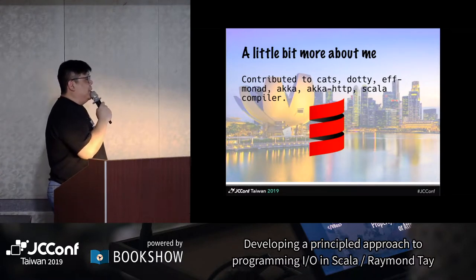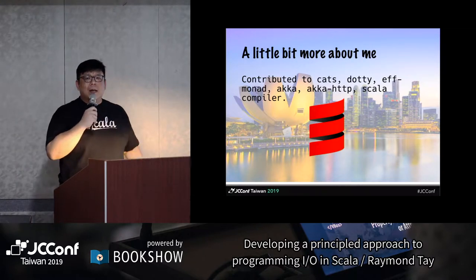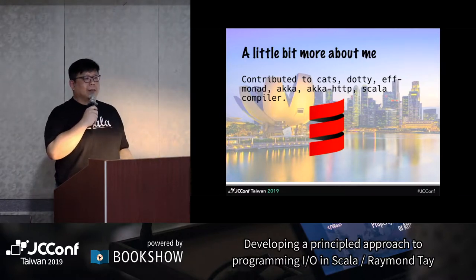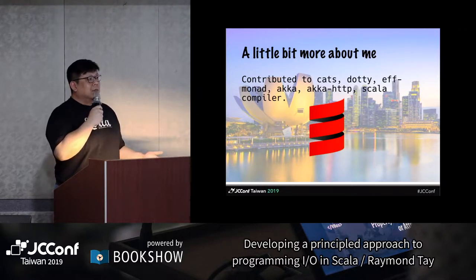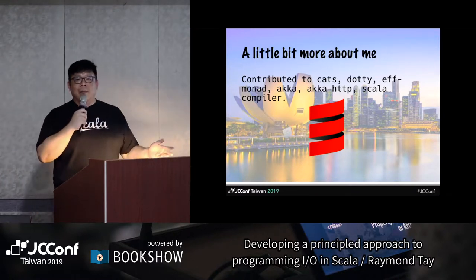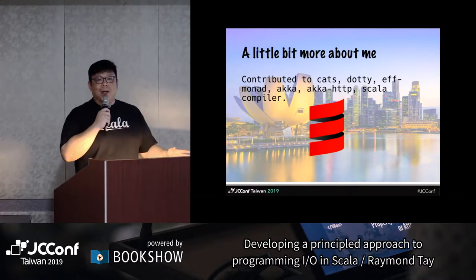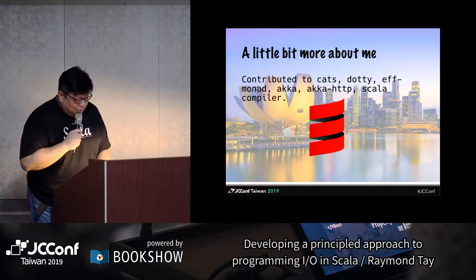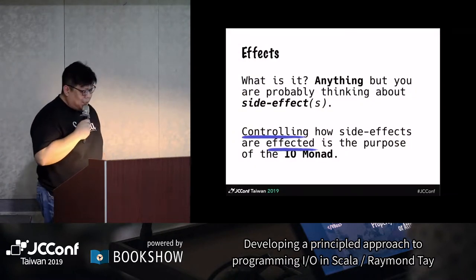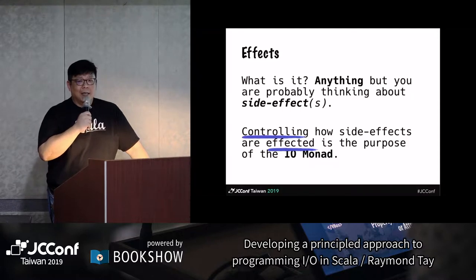This talk is really about effects, or rather the IO monad in Scala. Has anyone started using the CATS effect libraries in your work or as a hobby? So I'm going to try to give you a taste of what the IO monad in Scala looks like and how it can possibly be applicable for you. But for that we need to set the ground. We need to understand what an effect is. For functional programmers, we are very particular about what we mean by an effect.